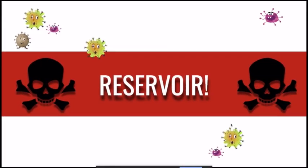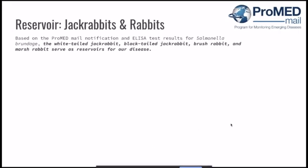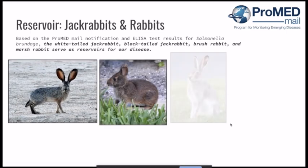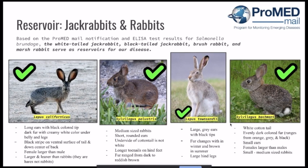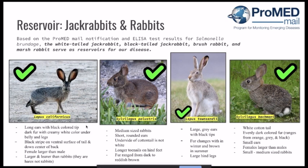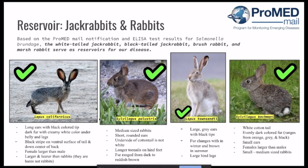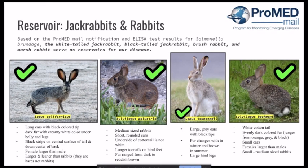Next, we have our reservoir. For our reservoir, we had jackrabbits and rabbits; we got this information based on a ProMed mail notification and through the test results of the ELISA. These are some pictures of our reservoirs. For the first one, we have Lepus californicus. Some main characteristics include long ears with black-colored tips, dark fur with a creamy white color under the belly and legs, a black stripe on the ventral surface of the tail, and females are usually larger than the males. They are larger and leaner than rabbits, and are actually hares, not rabbits.